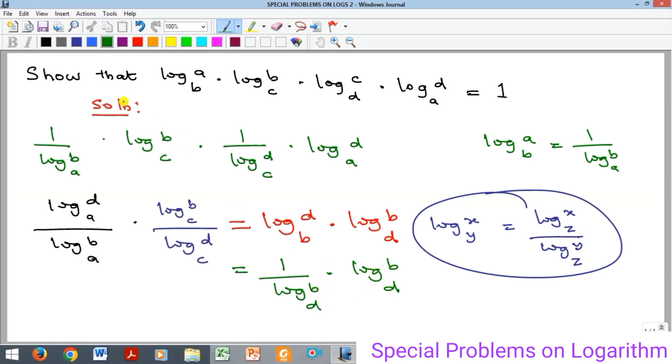1 over log_d(b) times log_d(b), which simplifies to 1. This is the required solution. You can see it has given us 1 as required.